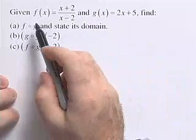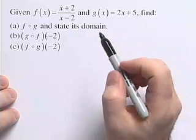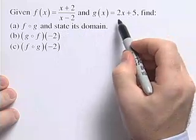For this problem, we're going to find the composition of two functions and then evaluate a composition at a given value. Here we're given f(x) = (x+2)/(x-2) and the second function g(x) = 2x+5.